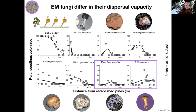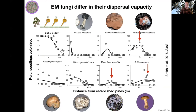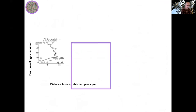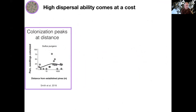You might also notice a pattern where a number of these fungi appear to peak in abundance farther away from the forest edge, which seems counterintuitive. If we focus on Suellis pungens, we know that colonization does peak at a distance. One possibility is that its spores tend to preferentially disperse long distances, being preferentially deposited farther from the forest edge. But from previous studies using spore trapping methods along with Suellis pungens-specific quantitative PCR to count spores reaching different distances from established pines, we can see that spore deposition does monotonically decrease as you move away from the forest edge. So we can rule that out as a potential explanation.